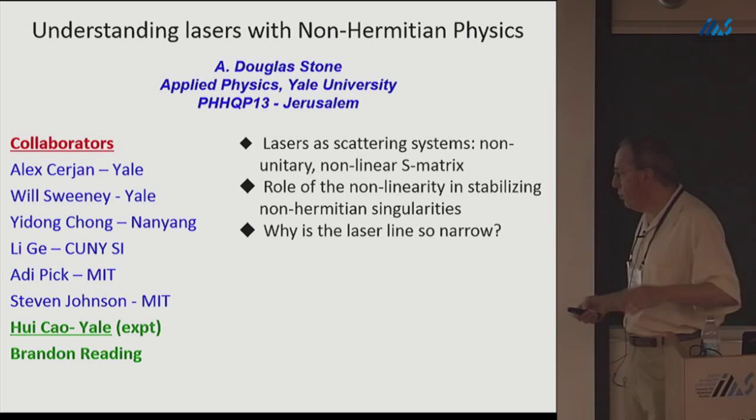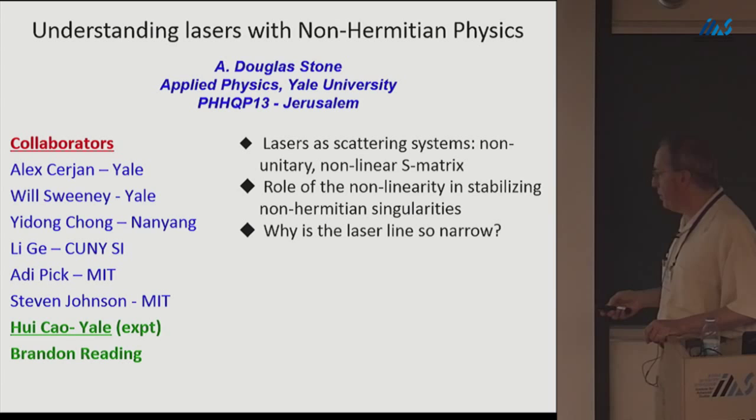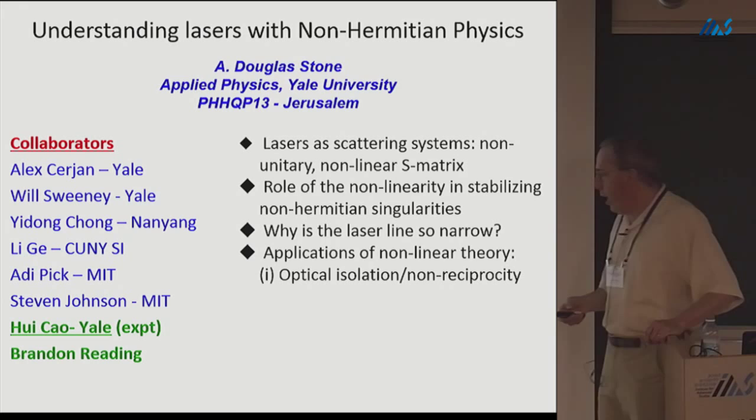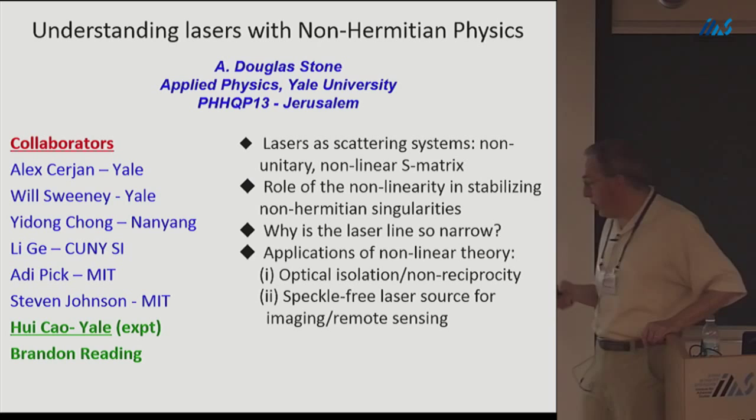Why is the laser line so narrow? The reason it's narrow is because it's actually a non-Hermitian singularity — though they don't like that answer. I have a few pedagogical comments and demonstrations about how it becomes so narrow. At the end I'll talk about applications of the non-linear theory, both to optical isolation or non-reciprocity, and to speckle-free imaging and remote sensing.